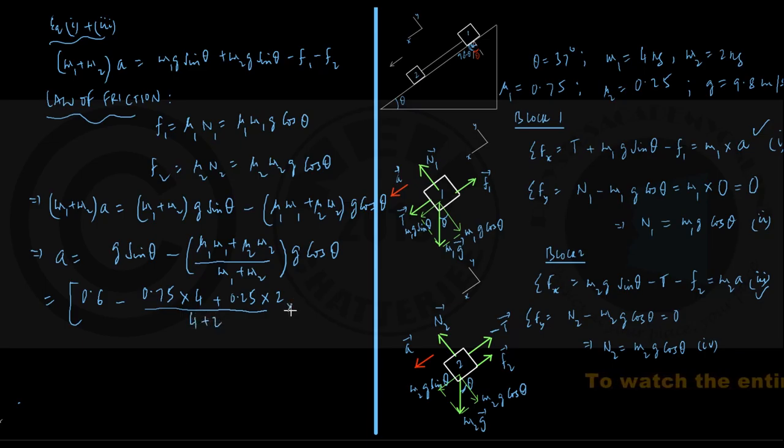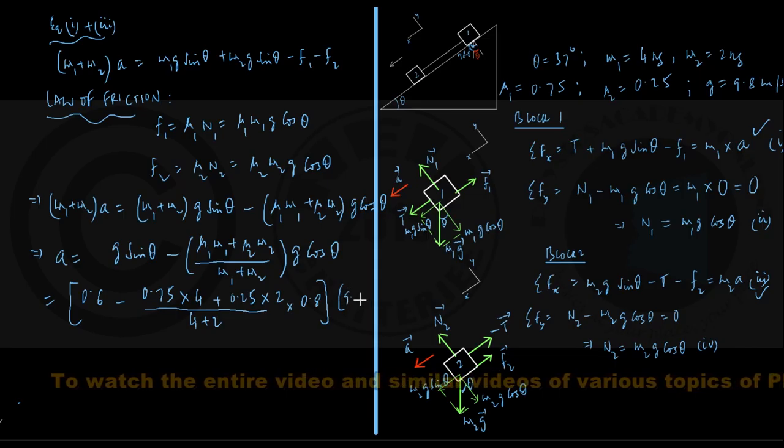into cos 37 degrees, that is about 0.8, this whole thing into the value of g, that is 9.8 m per second square.